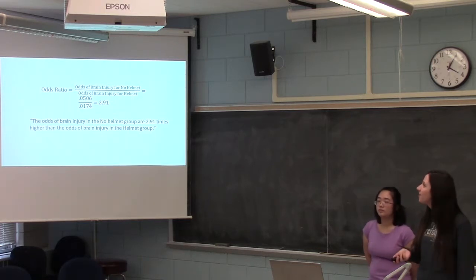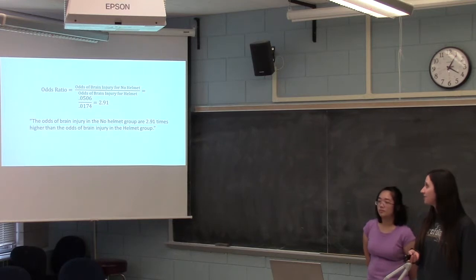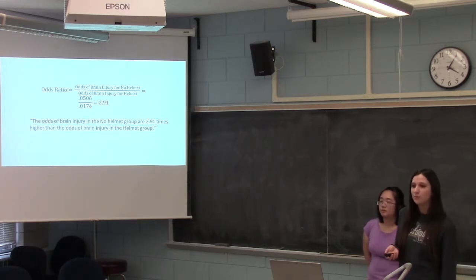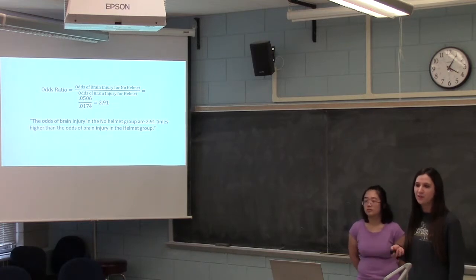So to find the odds ratio, we're going to take the odds of brain injury for no helmet over the odds of brain injury for helmet. So we saw this on the previous slide, so we have 0.0506 divided by 0.0174, and this equals 2.91. So this means that the odds of brain injury in the no helmet group are 2.91 times higher than the odds of brain injury in the helmet group.